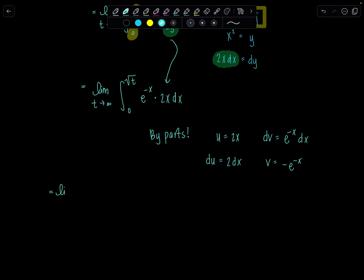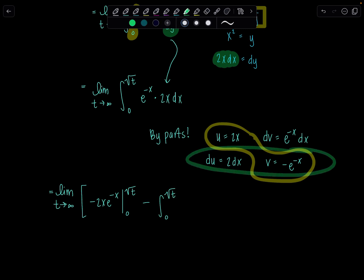Now make sure you're still writing lim every step of the way. Limit t approaches infinity. We have u times v, so that's going to be negative 2xe to the negative x, and that's going to get evaluated from 0 to square root of t. That's outside the integral already. And then minus integral 0 to square root of t, we have v du. But since there's another negative here, that'll switch this to be positive: 2e to the negative x dx. Close it up.